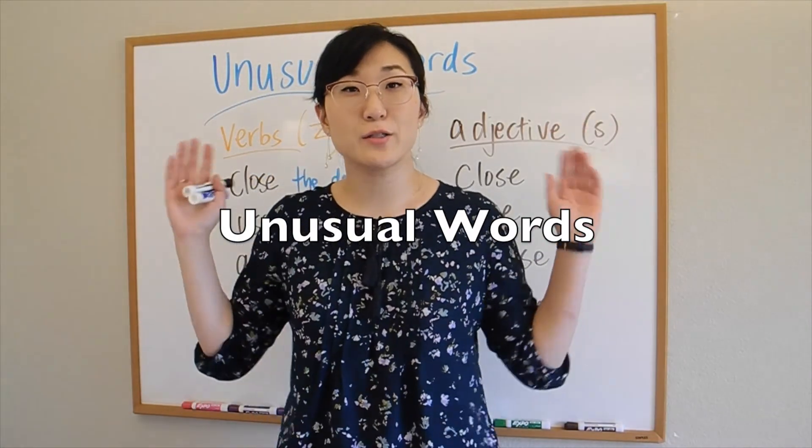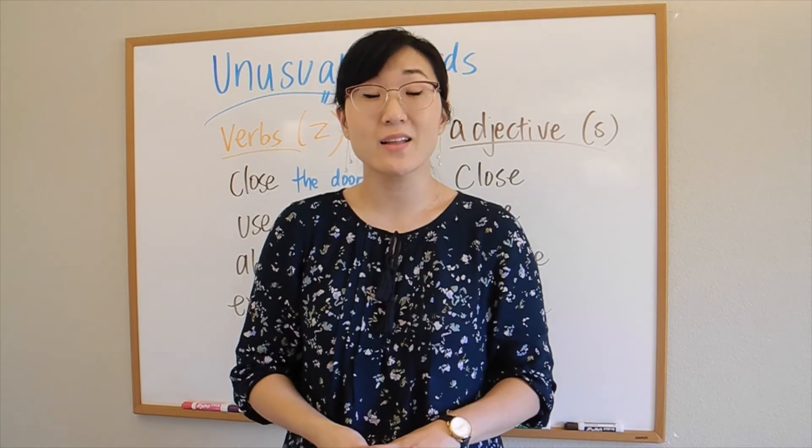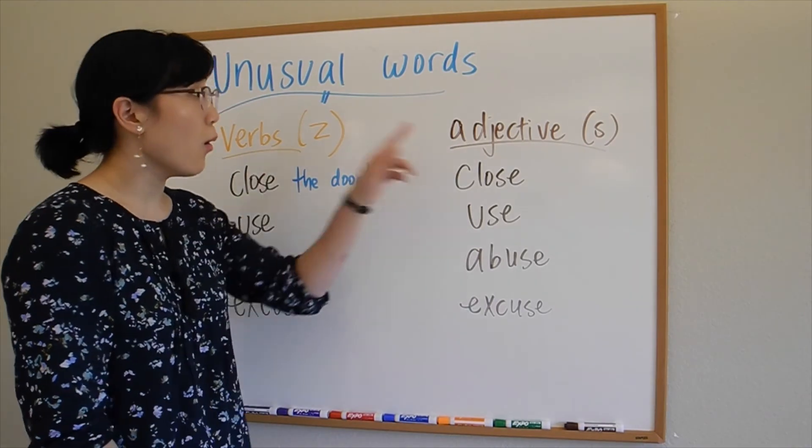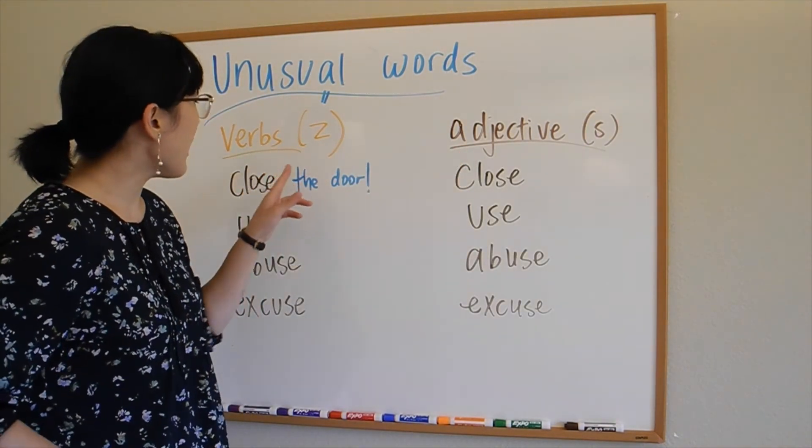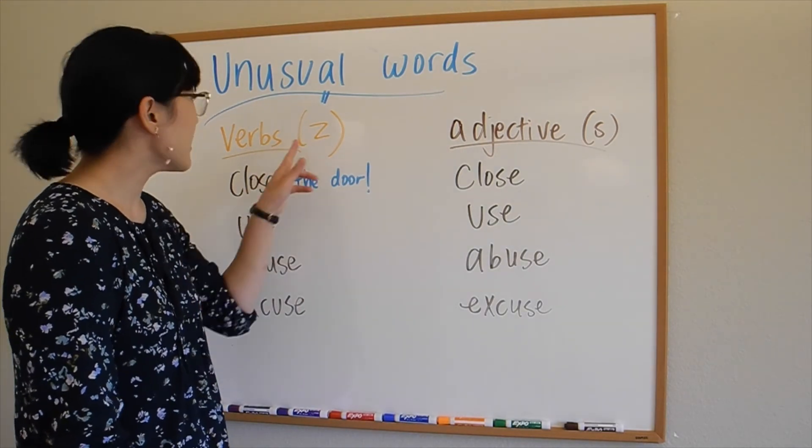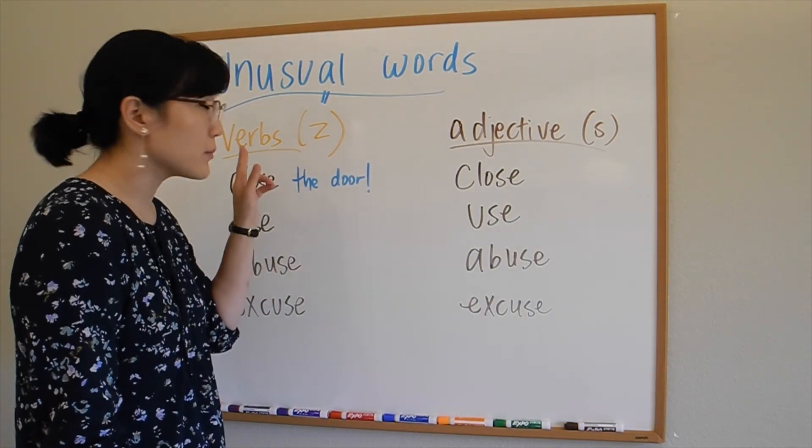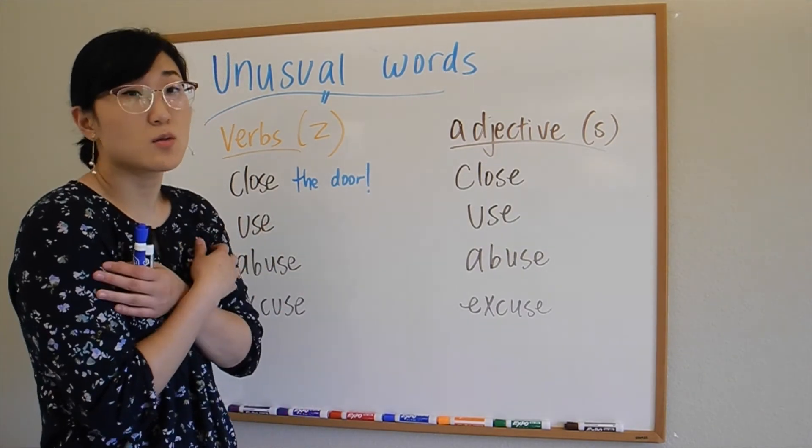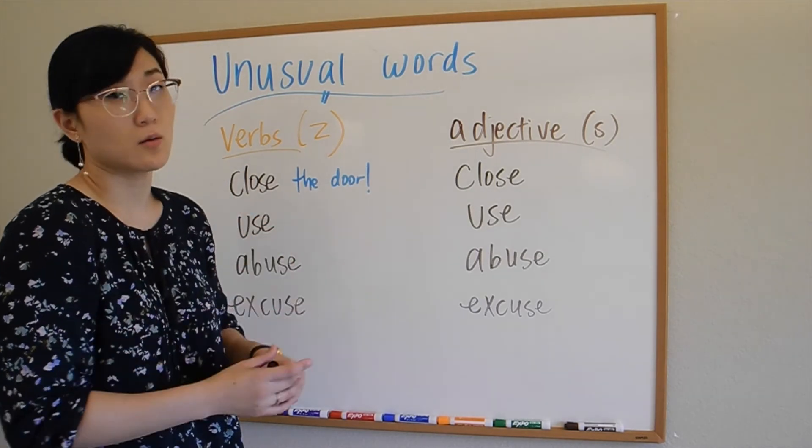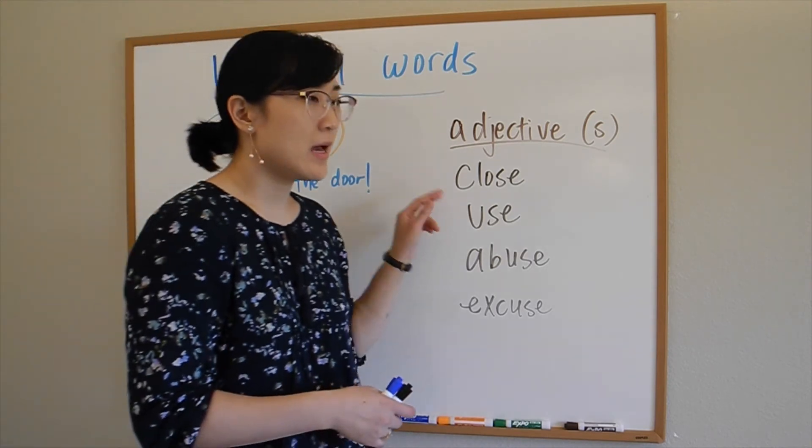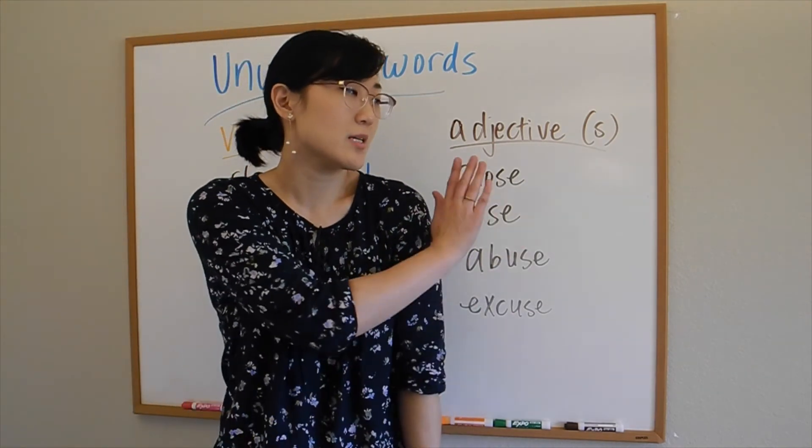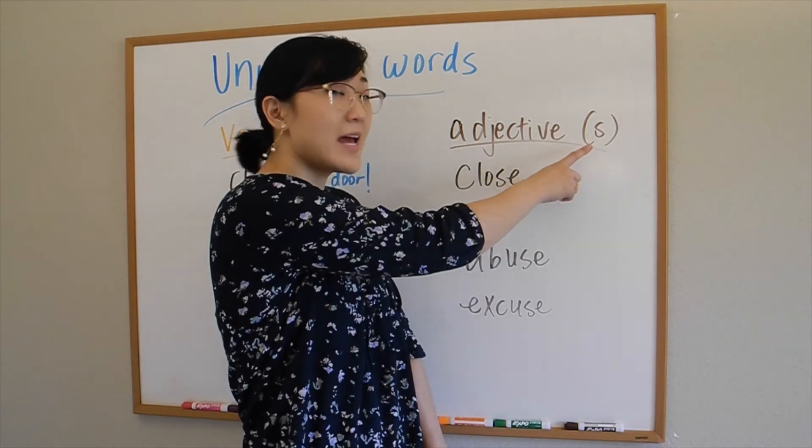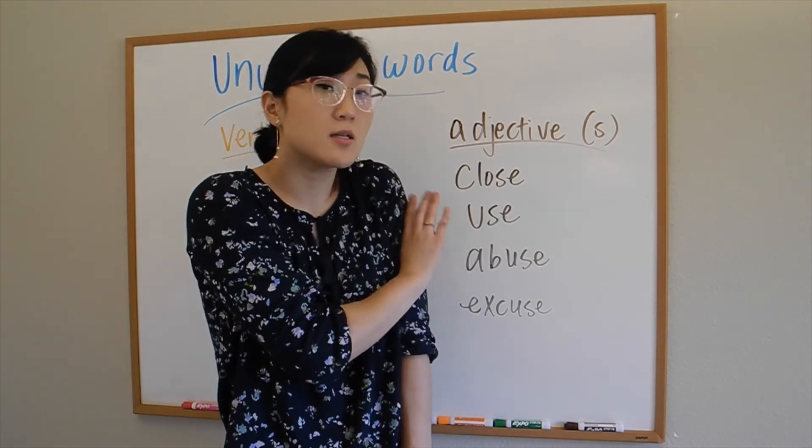To conclude our video, I want to talk about unusual words—common words you will see in English that have different pronunciations depending on if you use it in the context of a verb or an adjective. Words that end in an 's' have a 'z' sound if it's a verb. For example, I say, 'Hey, can you close the door? It's too cold outside, there's too much wind. Close the door.' If I use it as an adjective, maybe I'm standing at a bus station and someone is right here. Oh, someone is standing too close to me. It has an 's' sound. They're standing too close to me, so I ask them to give me space.